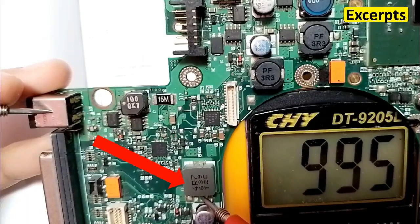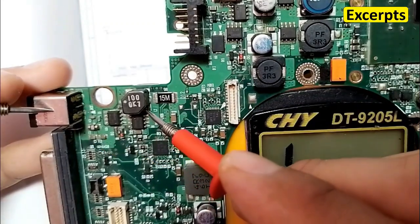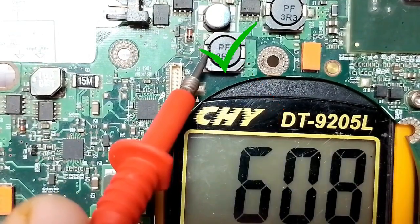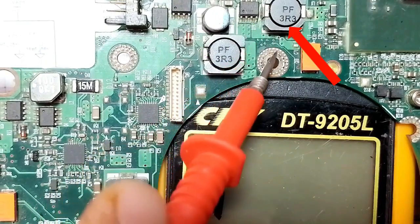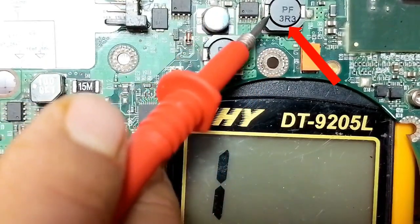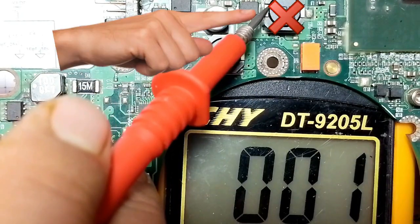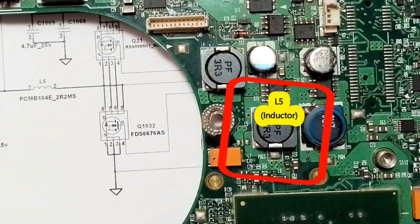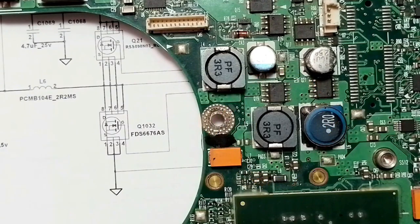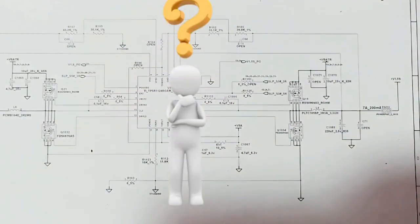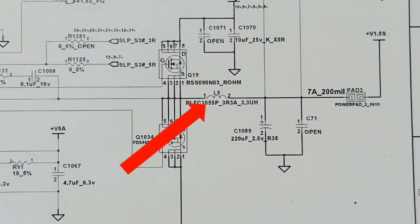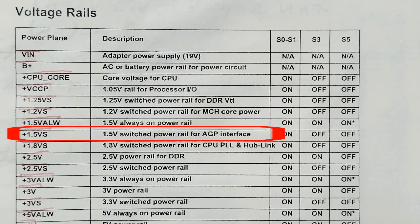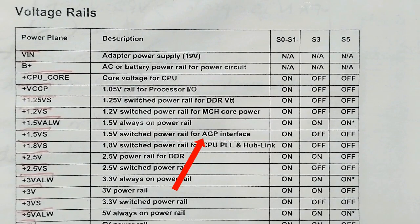Let's check the first inductor — we get a reading. The second one also reads fine. Let's check the fourth inductor, L5. Bingo! Here we have the short circuit — we detected it. L5 is shorted. Let's check which circuit L5 belongs to. L5 belongs to the 1.5 volt power rail — the 1.5 volt switched power rail for the AGP interface, which powers the graphic card.